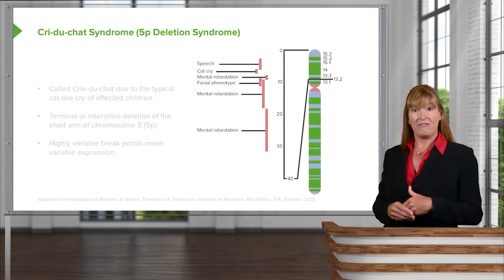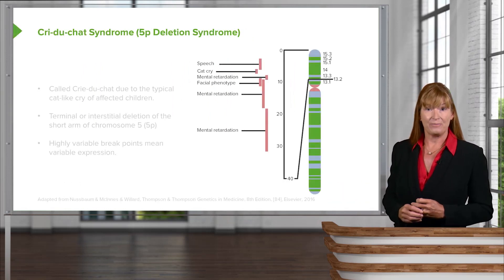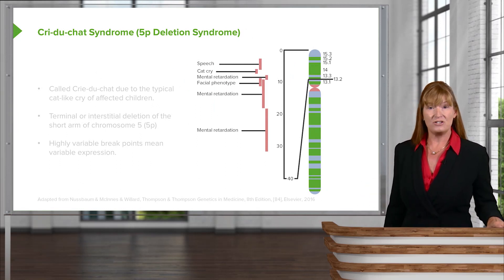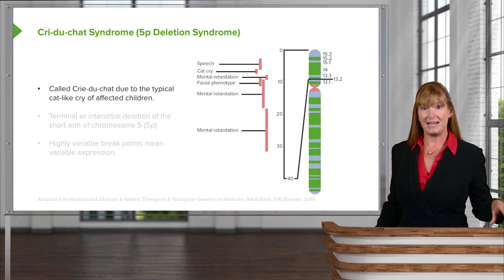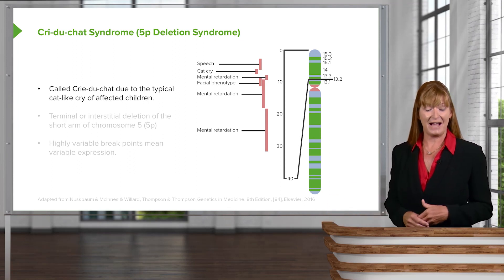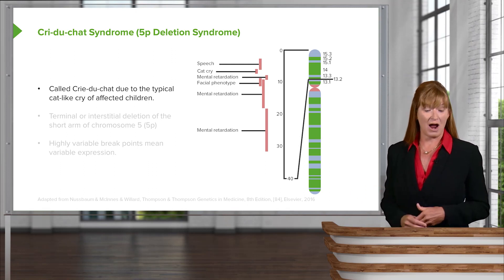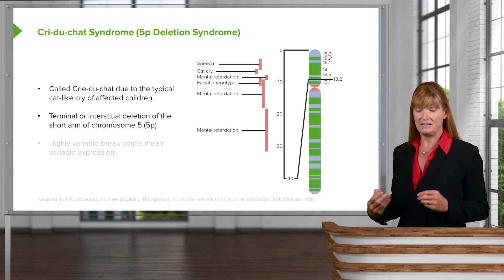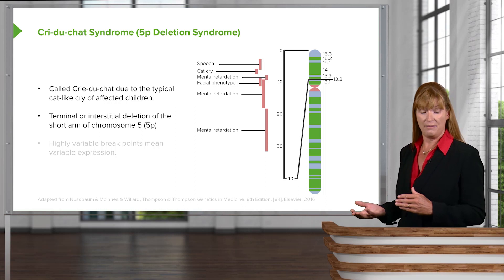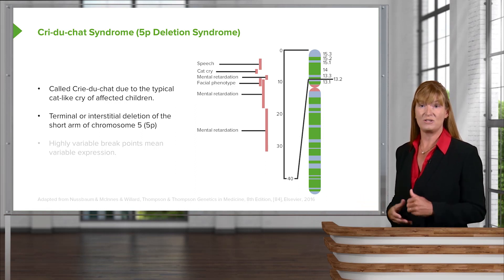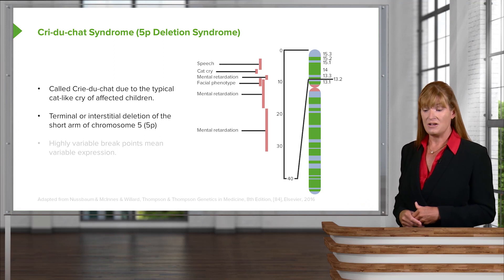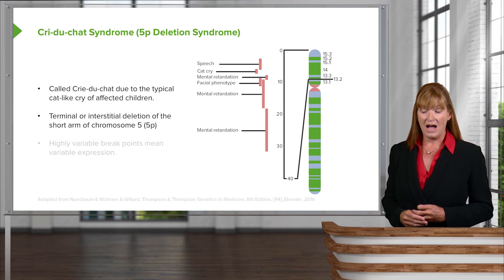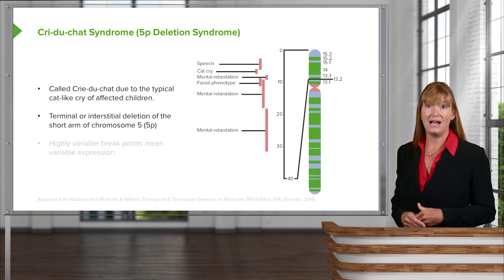Let's look at a deletion situation. Cri du chat is a condition that you'll be required to know. It gets its name because people suffering from it have a specific cat-like cry. It results from a deletion in the short arm P region of chromosome 5 — we call that 5P. The break of the chromosome can be highly variable.